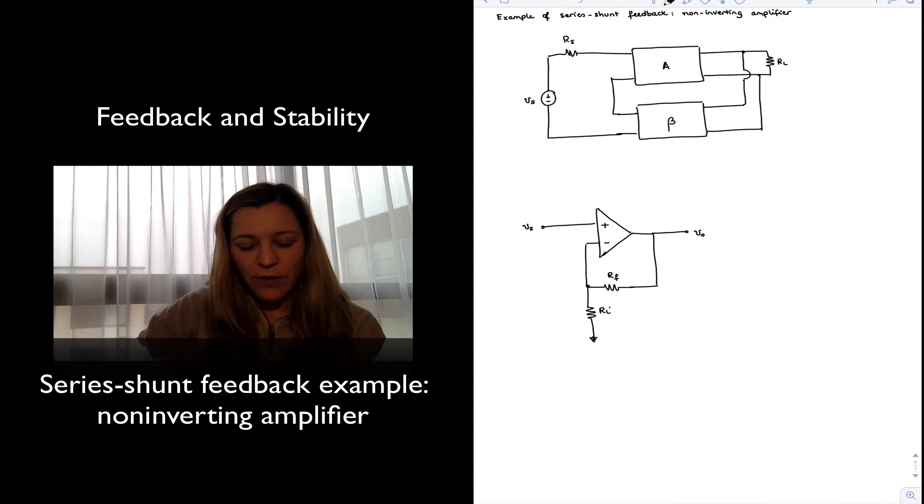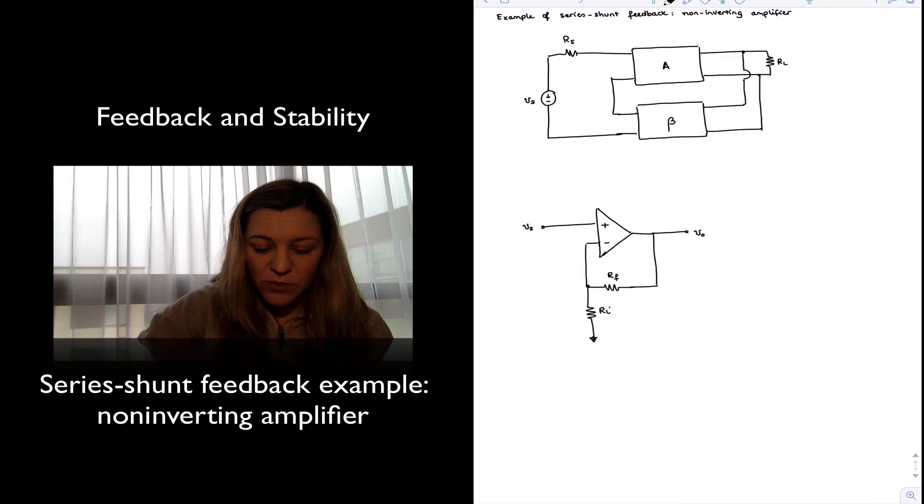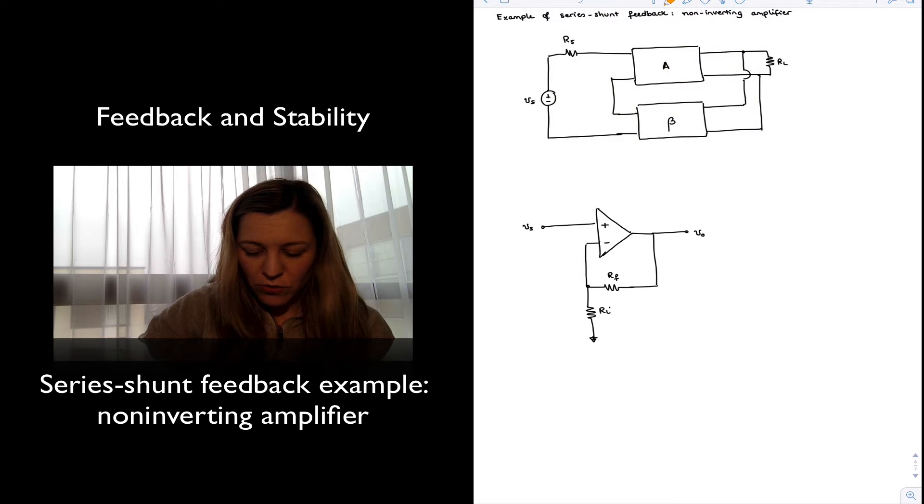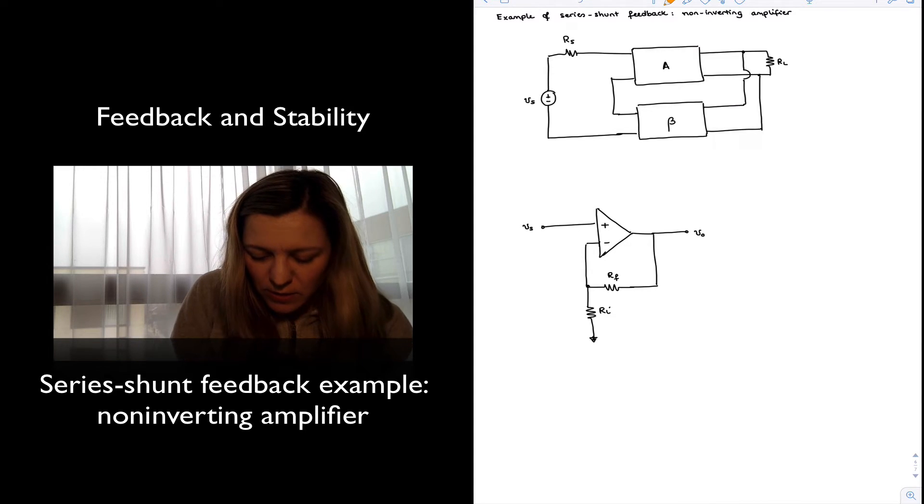First of all, I have redrawn the basic structure, the generic structure for a series-shunt, or series voltage amplifier, which consists of a feedback network. The input voltage or the feedback voltage is connected in series with the input voltage, with the source voltage, and the output is taken in shunt. The output signal is sampled in shunt. And so basically this could be our output signal right here, Vout.